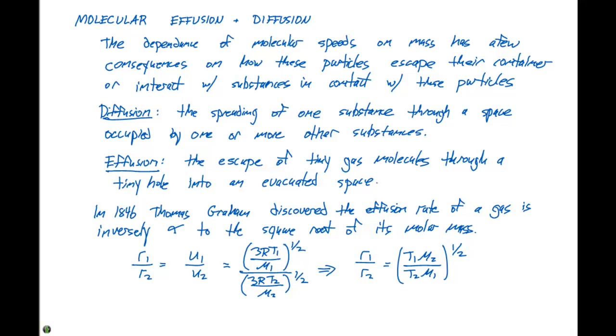A simplification that we can make here is if we have constant temperature, T1 and T2 are gonna be the same amount, so they're gonna cancel out. So we can say that at constant temperature, R1 over R2 is gonna be the molar mass of two divided by the molar mass of one, all to the 1/2 power.